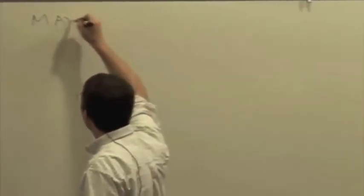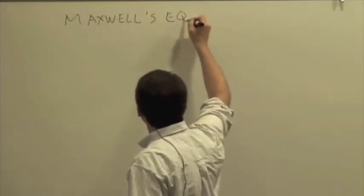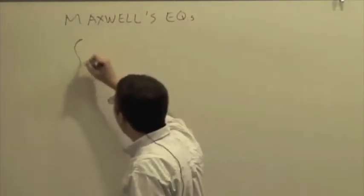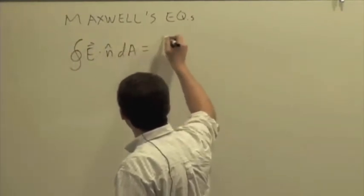We were talking last time about radiation, so we talked about Maxwell's equations. And we had Gauss's Law, the two versions for electric and magnetic fields.